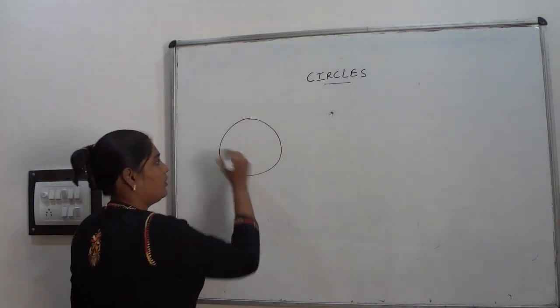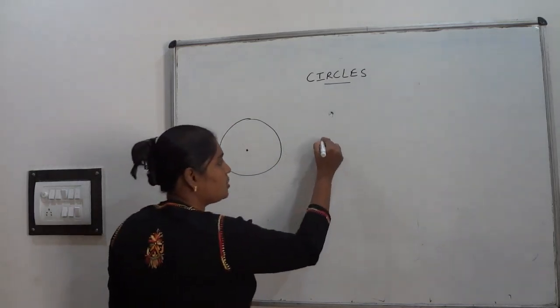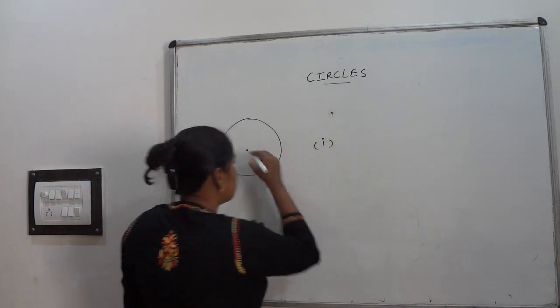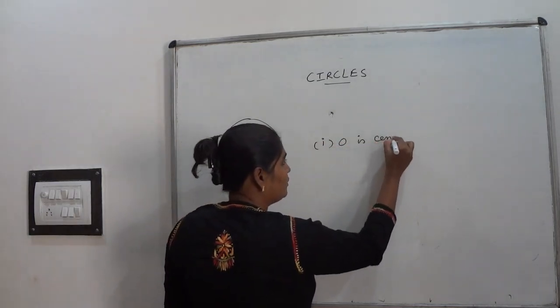First we draw a circle and you know what is center. The center point of a circle is called center of the circle. This is O point I mark. So O is center of circle.